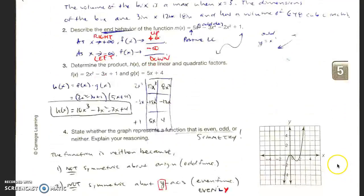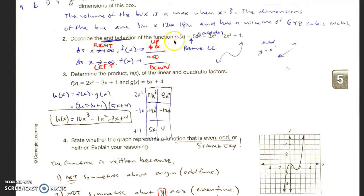Question number 2. The end behavior of a function m of x equals 5x to the 7th minus 3x to the 4th minus 2x plus 1. I recognize this is an odd function. The easiest odd function is x to the 1st. Starts down, ends up. It's just a linear equation. It's positive. The leading coefficient here is positive because there is no negative sign. So my graph should look something like this.